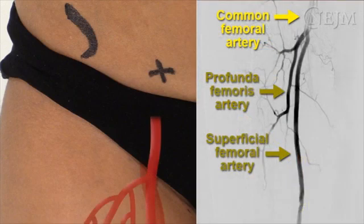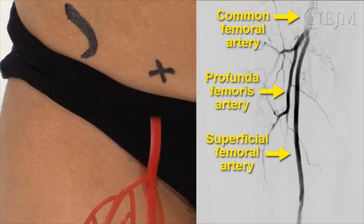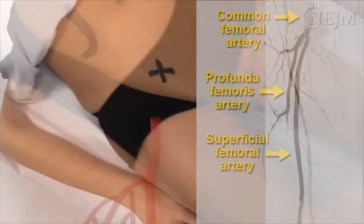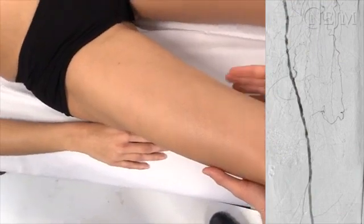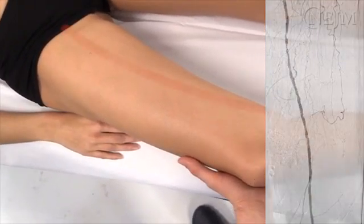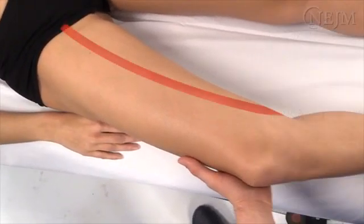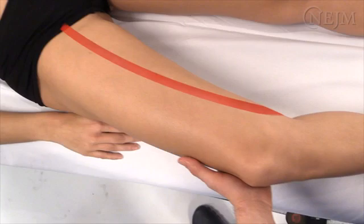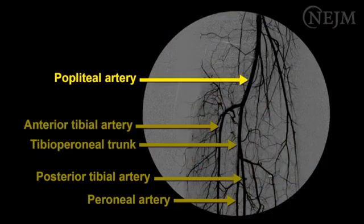Each common femoral artery divides to form the superficial femoral artery and the profunda femoris artery in the upper thigh. The superficial femoral artery travels through the anteromedial thigh and the subsartorial canal without branching and supplies the leg below the knee. At the level of the knee, the superficial femoral artery passes through the adductor hiatus and becomes the popliteal artery.